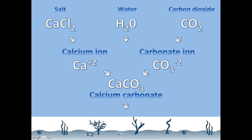Calcium carbonate is a compound that results from calcium ions reacting with carbonate ions in the water. Its chemical symbol is CaCO3, meaning it is made up of calcium, carbon, and oxygen.